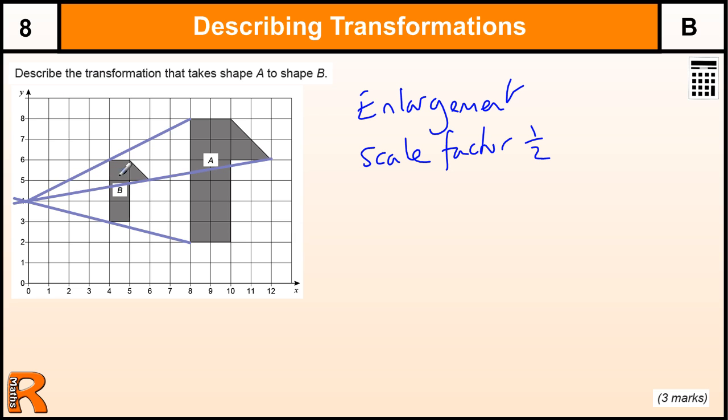So we can see that they all cross at 0,4, so the centre is at 0,4, so three marks, one for each part.